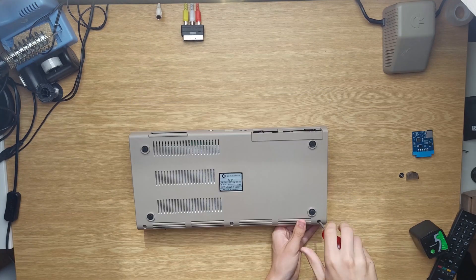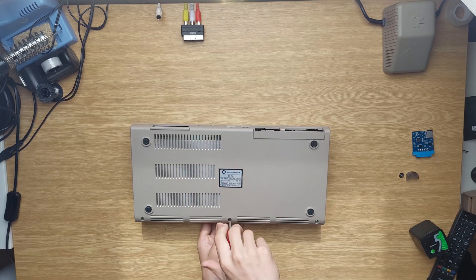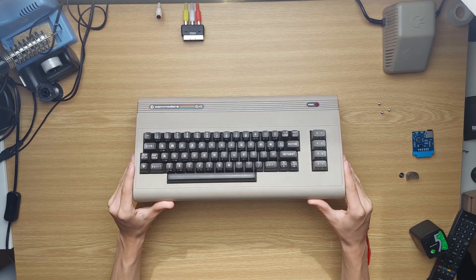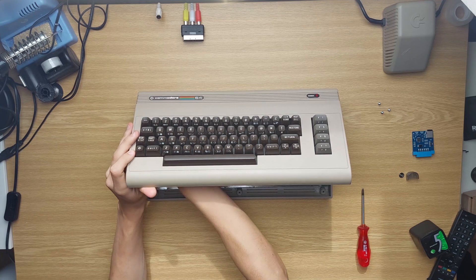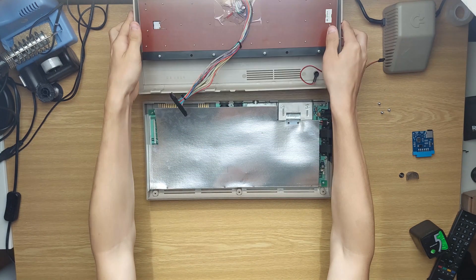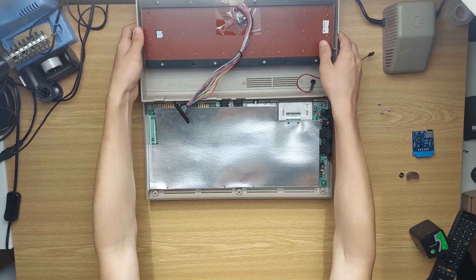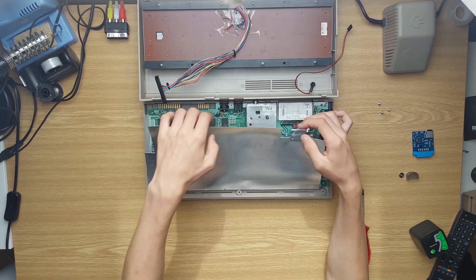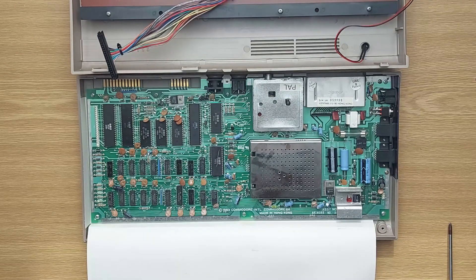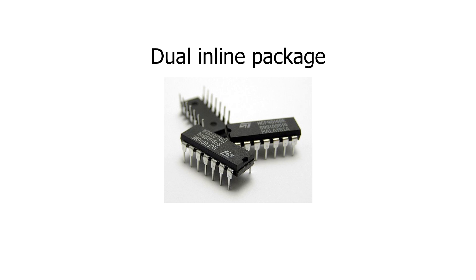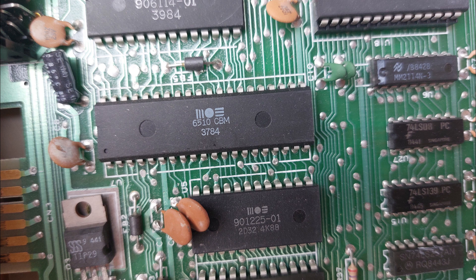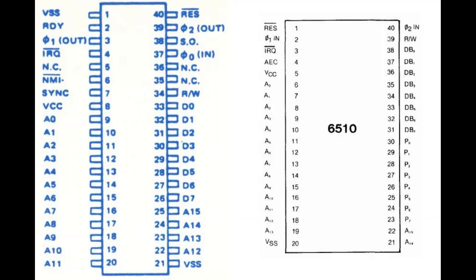Let's open the computer to understand it a little bit better. I didn't know that RF regulations were this bad back in the day. The first thing you notice when you break into this thing is that it doesn't look anything like a modern computer. There are a lot of DIPs — Dual Inline Package — which is basically the type of chip. The most important one for us is the 6510, which is the CPU of this machine. It's basically a 6502 but with a couple more functions.